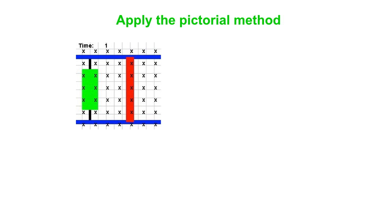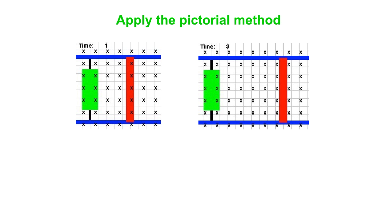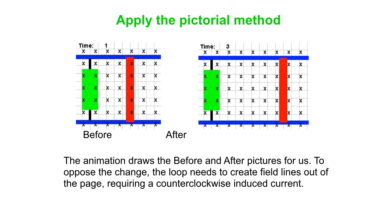So I'm going to do the pictorial method. So I'm just going to let basically the animation do it for me. So there's my before picture, and then the rod has gone further off to the right. So our loop is a lot bigger and way more field lines going through there than before. So the before picture, the after picture is the one on the right.